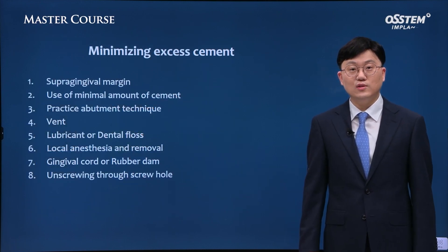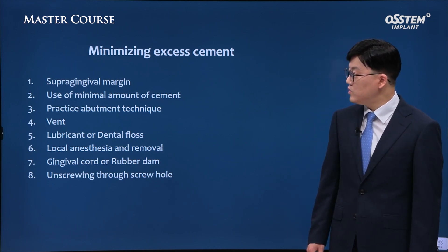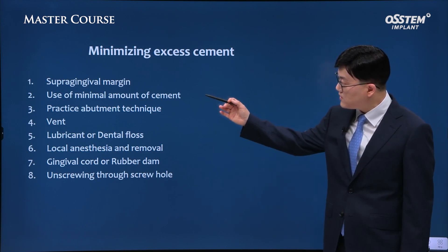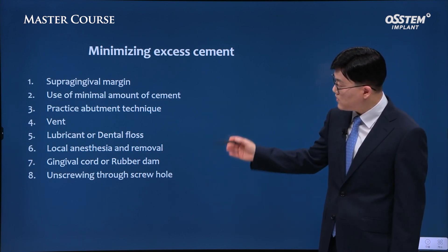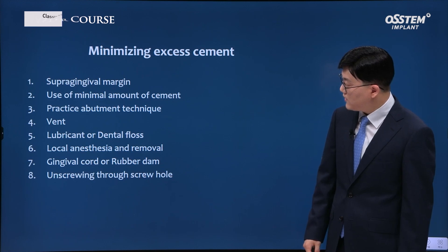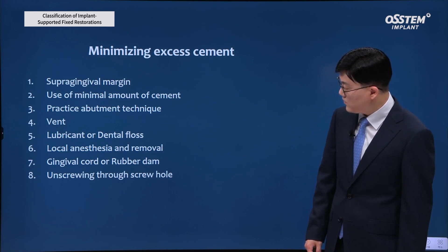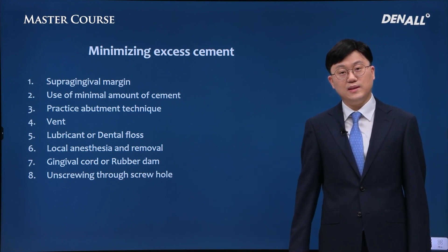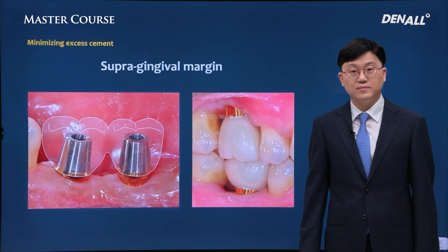Efforts to reduce excess cement are important. We can think of eight different ways to do that: supragingival margin, use of a minimal amount of cement, practice abutment technique, using a vent to remove cement, lubricant or dental floss, local anesthesia and cement removal, gingival cord or rubber dam, and unscrewing through the screw hole. These methods can be utilized to remove excess cement. Let's take a closer look at a couple of them.